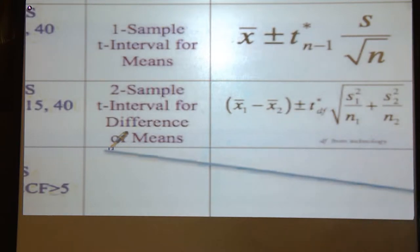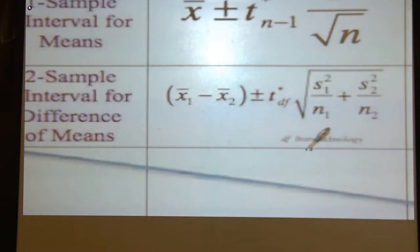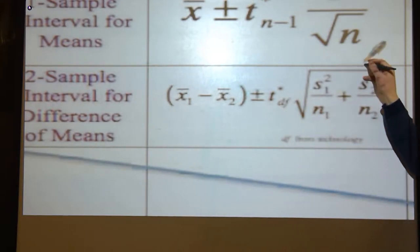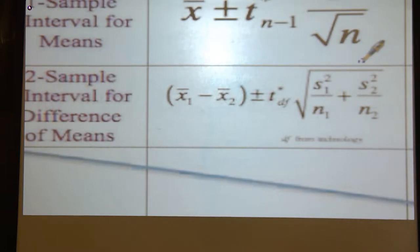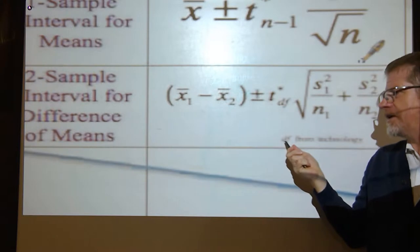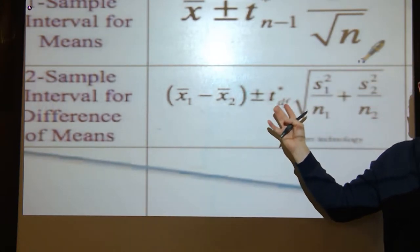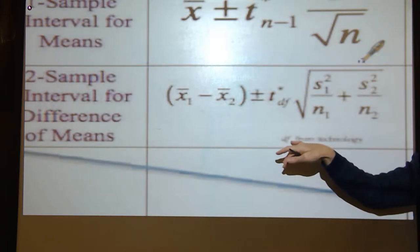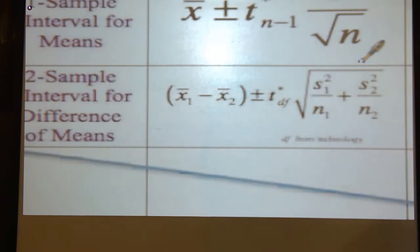The conditions here are the independence assumption, randomization condition or representative sample, and the normal population assumption is established by checking the nearly normal condition twice, once for each sample. The sample has to be drawn from two groups which are independent of each other. The independent groups assumption has to be established.